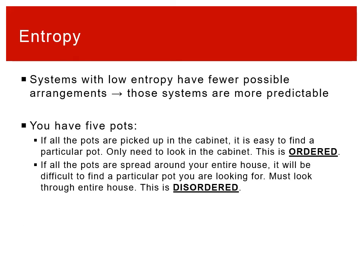Systems with low entropy have fewer possible arrangements. If you say everyone sits in a ring, or everyone sits in the front or back, there is only one possible arrangement, which makes the system more predictable. When we talk about being ordered, there are very few arrangements and the system is very predictable — we know exactly what it's going to look like.